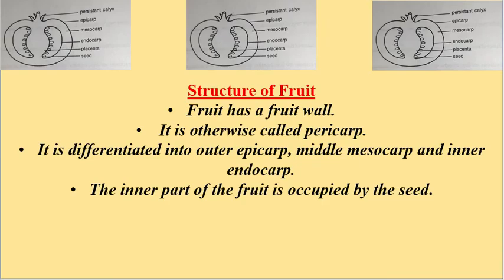Structure of fruit: The fruit has a fruit wall called the pericarp. The pericarp is differentiated into the outer epicarp, middle mesocarp, and inner endocarp. The inner part of the fruit is occupied by the seeds. The endocarp is present in the innermost region, the mesocarp is present between the endocarp and epicarp, and the epicarp is the outer covering of the fruit.